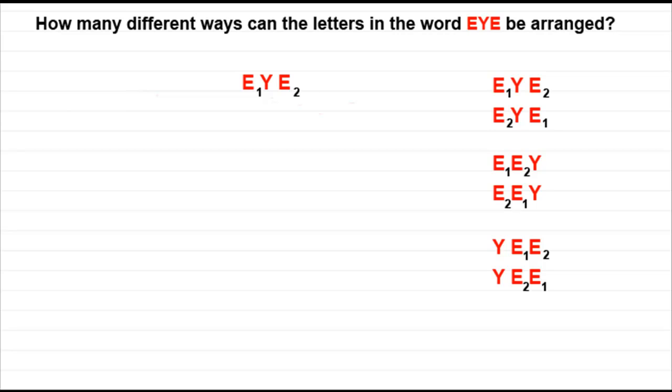So if they were all different, the number of arrangements would be three factorial, which comes to six. But we know that they're not all different. They haven't got subscripts on these E's.